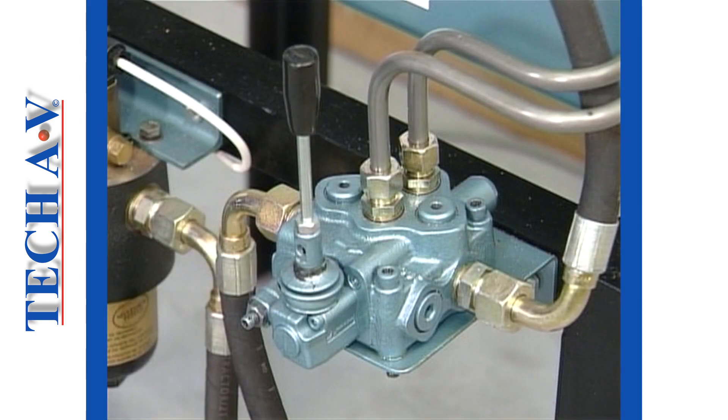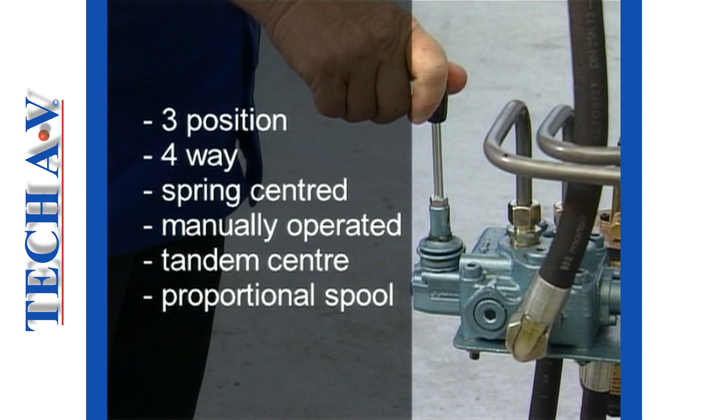Let us now look at the directional control valve. Before we go into detail, let us first give it a full description that goes like this. It is a three-position, four-way, spring-centered, manually operated, tandem-center, proportional spool valve. Now, this is quite a name to give anything, and it's not likely that you will remember it. However, all those descriptive features can be shown in symbolic form.